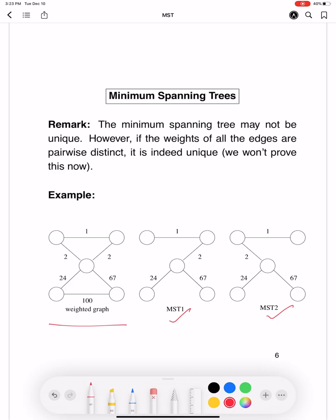Essentially, the weights of both these trees are 24 plus 2 plus 1 plus 67. That is equal to 94. So the weights of both these spanning trees is 94. So the spanning tree or a minimum spanning tree may not necessarily be unique.